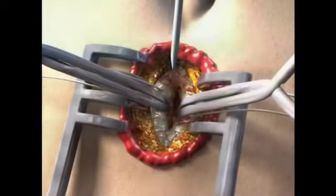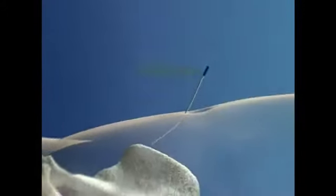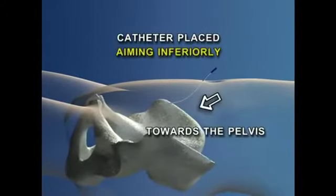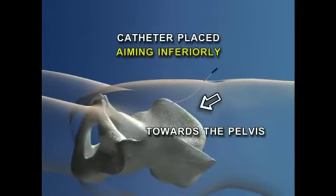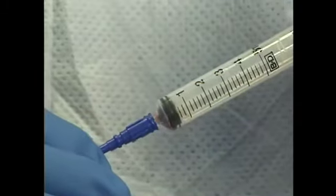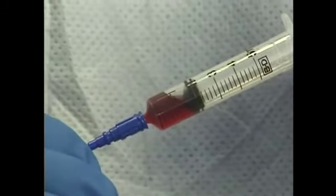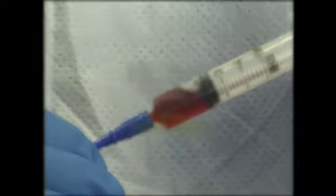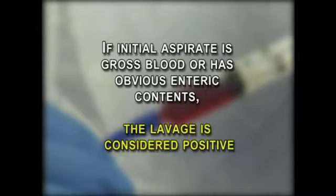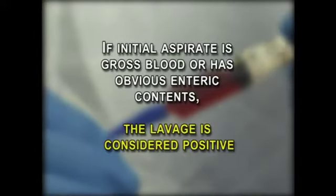The peritoneal lavage catheter is then placed into the abdomen aiming inferiorly towards the pelvis. A syringe is attached to the catheter initially to allow for the initial aspiration of any blood or abdominal fluid. If the initial aspirate is gross blood or has obvious enteric contents, the lavage is considered positive.